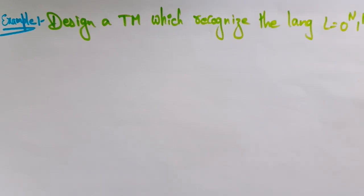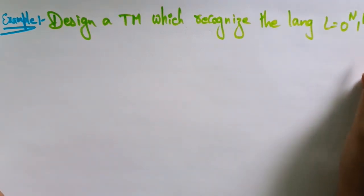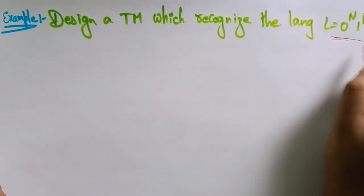Hi students, welcome back. Coming to the next example: here they are asking to design a Turing machine which recognizes the language L = 0^N 1^N.